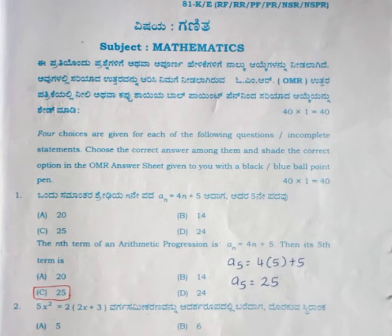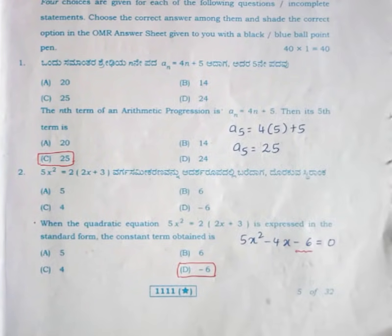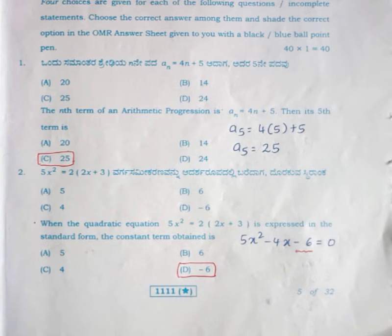For the first question, I won't read out the question in detail — you already have the question paper. The answer is option C, 25. For the next question, we need to find out the constant term. After simplifying, we get option D, minus 6, as the answer.